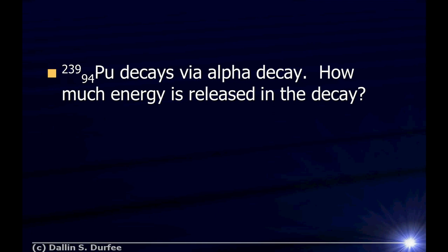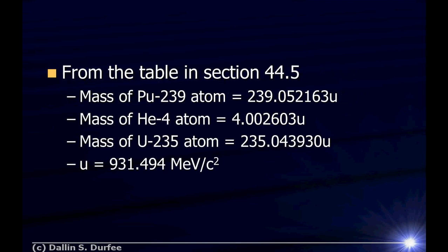Now, plutonium-239 decays via alpha decay — how much energy is released in the decay? This is the same process, but now I want to know how much energy is released. The energy released is just going to be the change in mass times C squared.